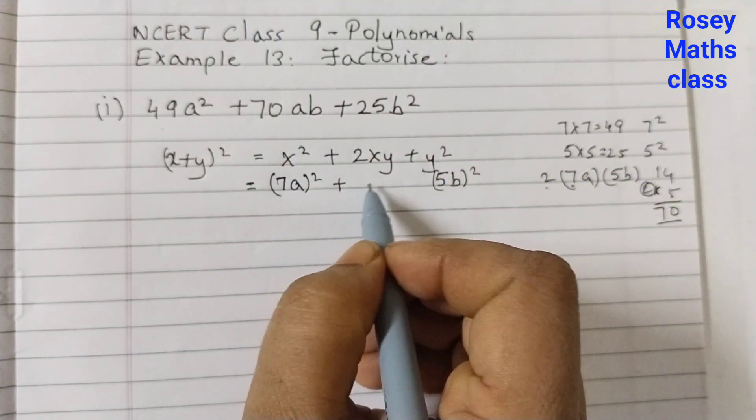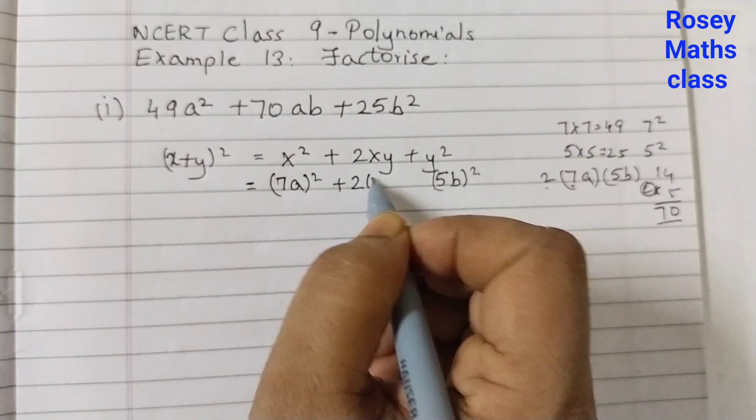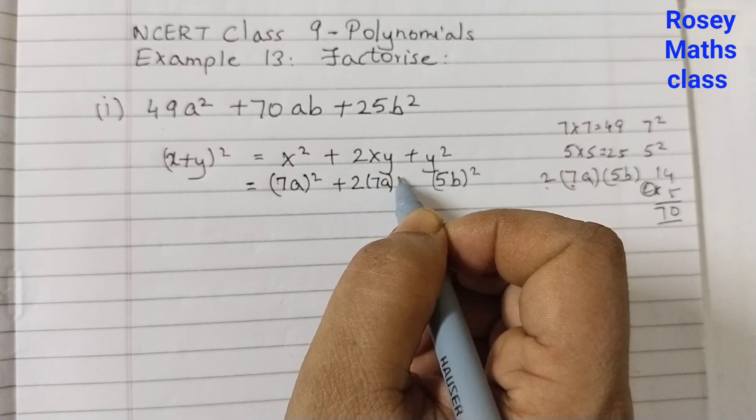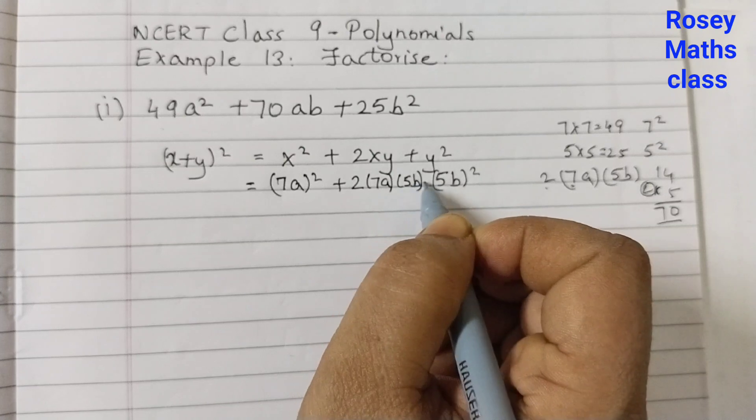So this term, the middle term, we are going to write as 2 into 7a into 5b plus.